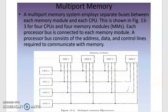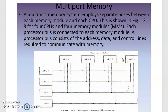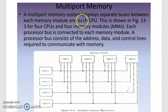The second physical structure is multiport memory. In a multiport memory system, there are separate buses between each memory module and each CPU. Each memory module is connected to multiple ports, allowing different CPUs to access different memory modules simultaneously.